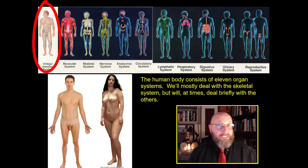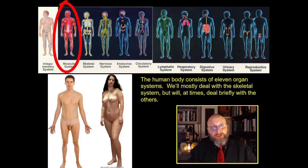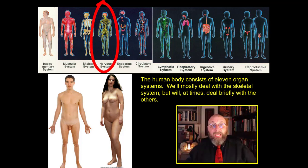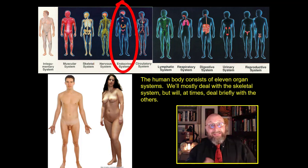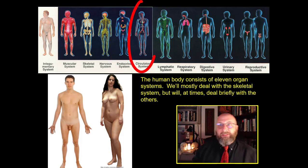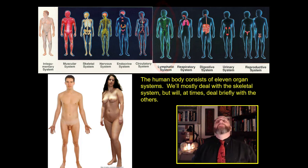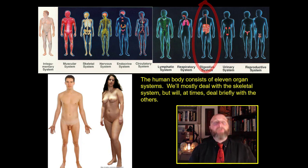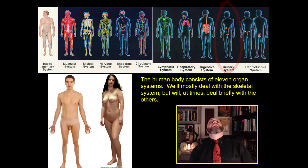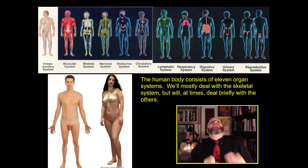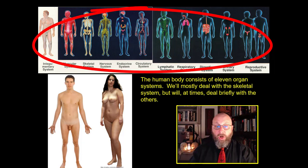We have the integumentary system, which is the skin. We have the muscular system - smooth, cardiac, and skeletal muscles. The skeletal system itself, which we'll talk a lot about. The nervous system - the brain, spinal column, and all the nerves. The endocrine system - glands that release secretions which change the shape of the human body. The circulatory system moves blood around. The lymphatic system moves lymphs. The respiratory system - the lungs, mouth, and larynx. The digestive system extracts nutrients from food. The urinary system purges wastes. And finally, the reproductive system, which allows us to make more tiny little humans. Physical anthropology addresses all of these, but mostly focuses on the skeletal anatomy.